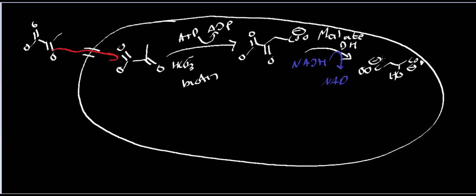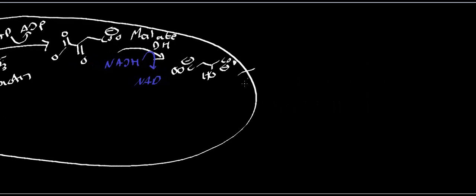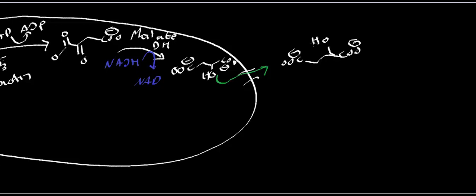It turns out there are malate transporters in the mitochondrial membrane. So while oxaloacetate cannot exit, malate can exit the mitochondria. Now malate is out in the cytosol where it can be reacted with cytosolic malate dehydrogenase. There is a mitochondrial malate dehydrogenase (which we focused on in the TCA cycle), but there is also a cytosolic one.